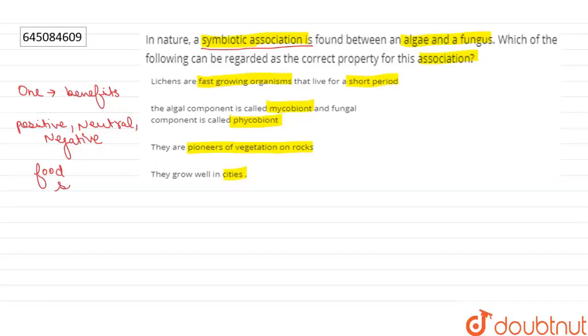Now if we talk about lichens, lichens are formed by the symbiotic association of algae and fungus. Lichens are pollution indicators. They are very sensitive to pollution, especially sulfur dioxide. As we know, in cities there is more pollution, so this statement is wrong. Lichens grow very slowly.